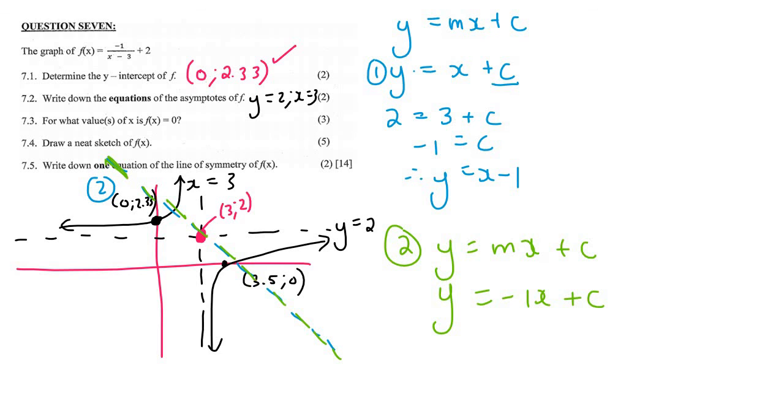To find c, you just plug in that same point, because both lines go through it. So you can say that 2 = -1 times 3 + c. If you solve for c, you get 5. Therefore, the answer for that one would be y = -x + 5. So those are the two symmetry lines that we could use.